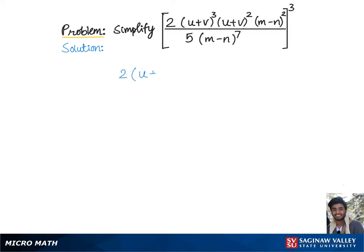To simplify 2 times u plus v cubed times u plus v squared times m minus n squared divided by 5 times m minus n to the 7th and the whole group to the 3rd power, let's begin by working on the exponents with common base u plus v.